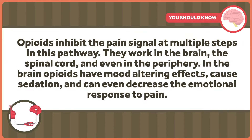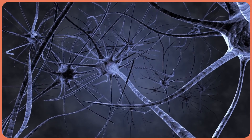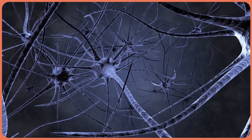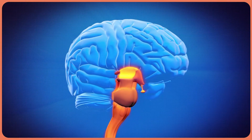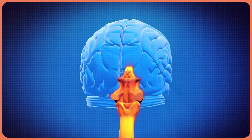So what does all of this have to do with opioids? The cool thing about opioids is that they inhibit the pain signal at multiple steps in the pathway. They work in the brain, the spinal cord, and even in the periphery. In the brain, opioids have mood-altering effects, cause sedation, and can even decrease the emotional response to pain. Opioids block the signaling from the primary nociceptors to the secondary neurons.